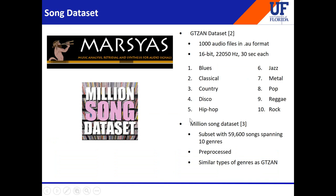The first dataset used is the GTZAN dataset, which has 1,000 audio files, 16 bits each, with a sampling rate of 22,050 Hz. Each track is 30 seconds and there are 10 genres. In addition, we also used the Million Song dataset, which has a much larger number of songs — 59,600 — but these were pre-processed audio files. The number of genres was the same as in the GTZAN dataset.